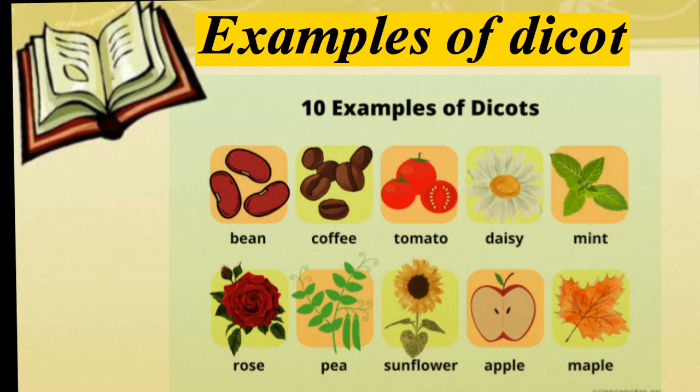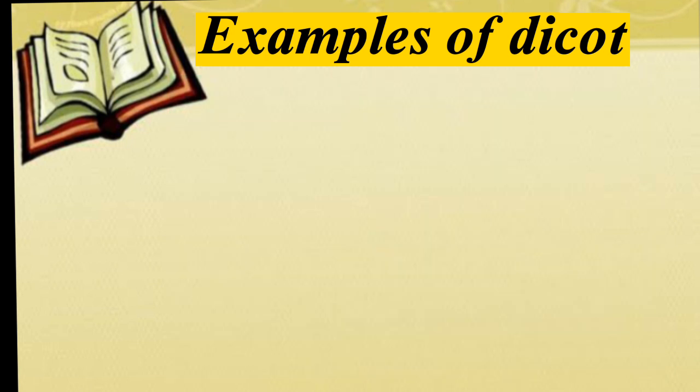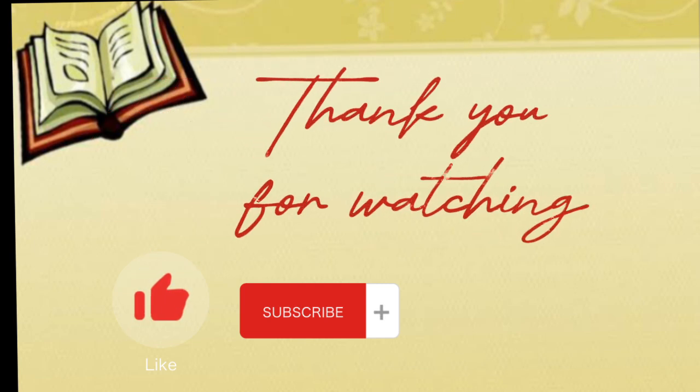These are the examples of dicot: bean, coffee, tomato, daisy, mint, rose, pea, sunflower, apple, and maple. This is all about my topic. Thank you for watching.